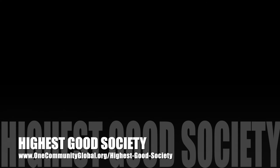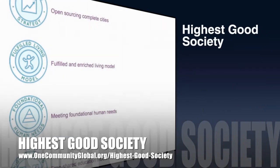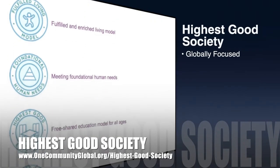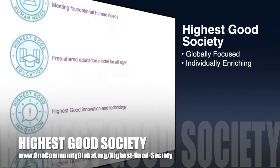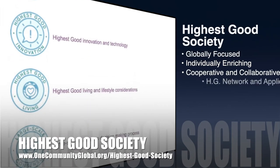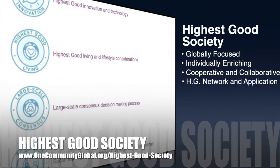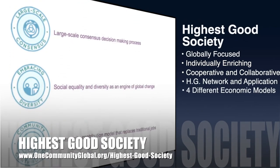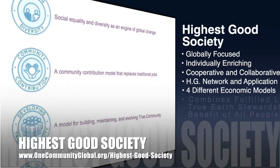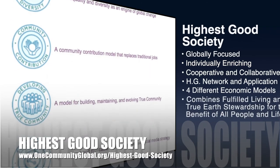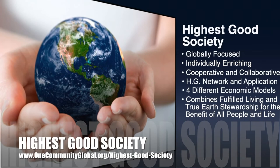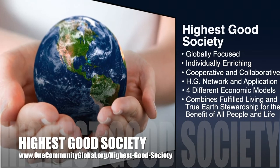The One Community approach to highest good society is globally focused, individually enriching, cooperative and collaborative. It includes a highest good network and application, four different economic models, and combines fulfilled living and true earth stewardship for the benefit of all people and all life on this planet.